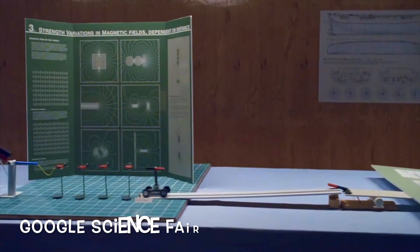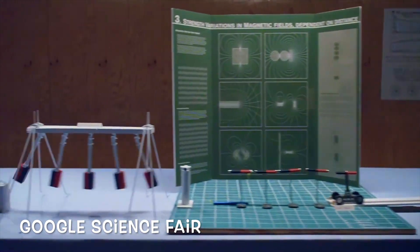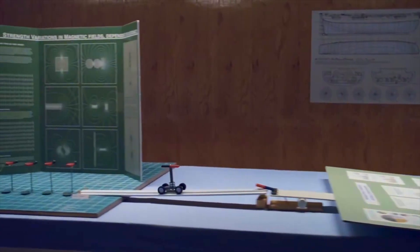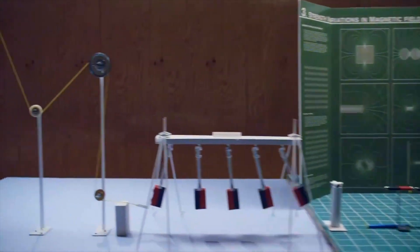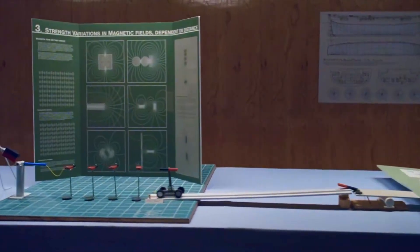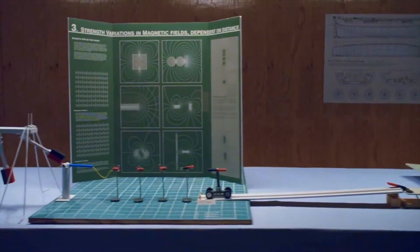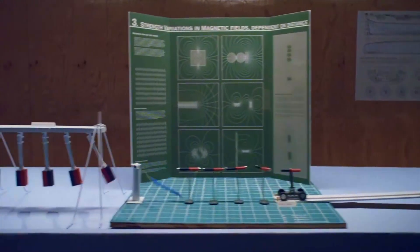What if we could make a Newton's Cradle that requires no contact between the balls but could still transfer the energy? Well that's exactly what we did for the Google Rube Goldberg machine. Using magnets to repel one another we were able to simulate how a Newton's Cradle normally acts without any physical contact.